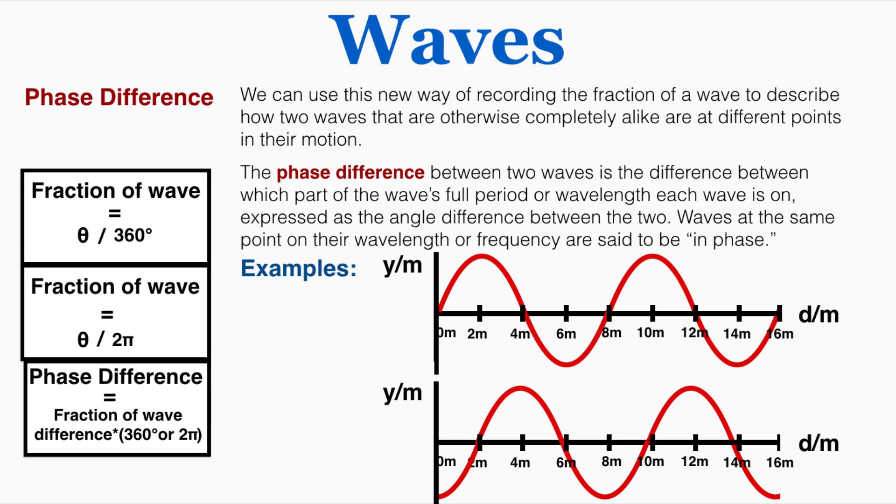We can use this new way of recording the fraction of a wave to describe how two waves that are otherwise completely alike are at different points in their motion. This is called the phase difference between two waves. This is the difference between which part of the wave's full period or wavelength each wave is on expressed as the angle difference between the two. Waves at the same point on their wavelength or frequency are said to be in phase. So there's no phase difference between two waves that are perfectly alike.